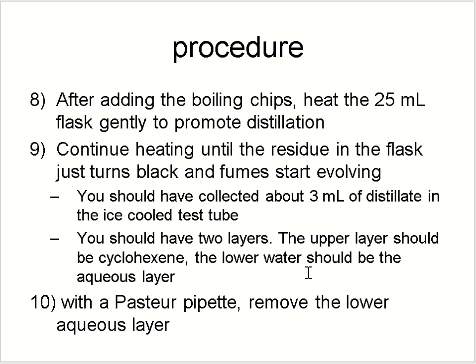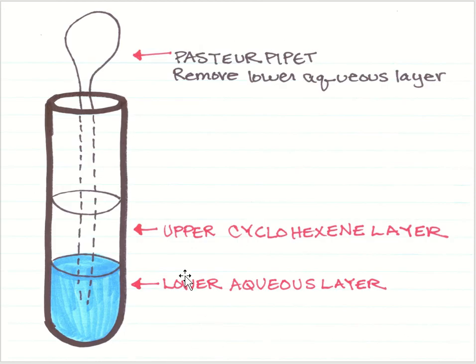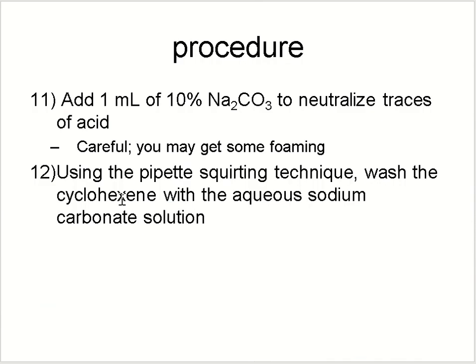With a pipette, remove the lower aqueous layer. You will get your cyclohexene — since it is less dense than water, it will be on the upper side of your test tube. Then add 1 mL of sodium carbonate solution to neutralize traces of acid. It will form some foam, so be careful. Using the pipette squirting technique, wash the cyclohexene with the aqueous sodium carbonate solution to neutralize the traces of acid.